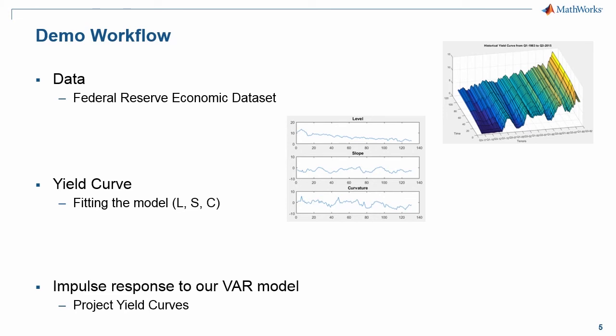Then for our vector autoregressive model, I will leverage some functionality within the Econometrics Toolbox. We can quickly fit a vector autoregressive model and then use its predictive capabilities. We're going to use its pure predictive capabilities to generate level, slope, and curvature. We will also put some impulses into the system to create stressed values for level, slope, and curvature. Once we have these, we can reconstruct the yield curve.